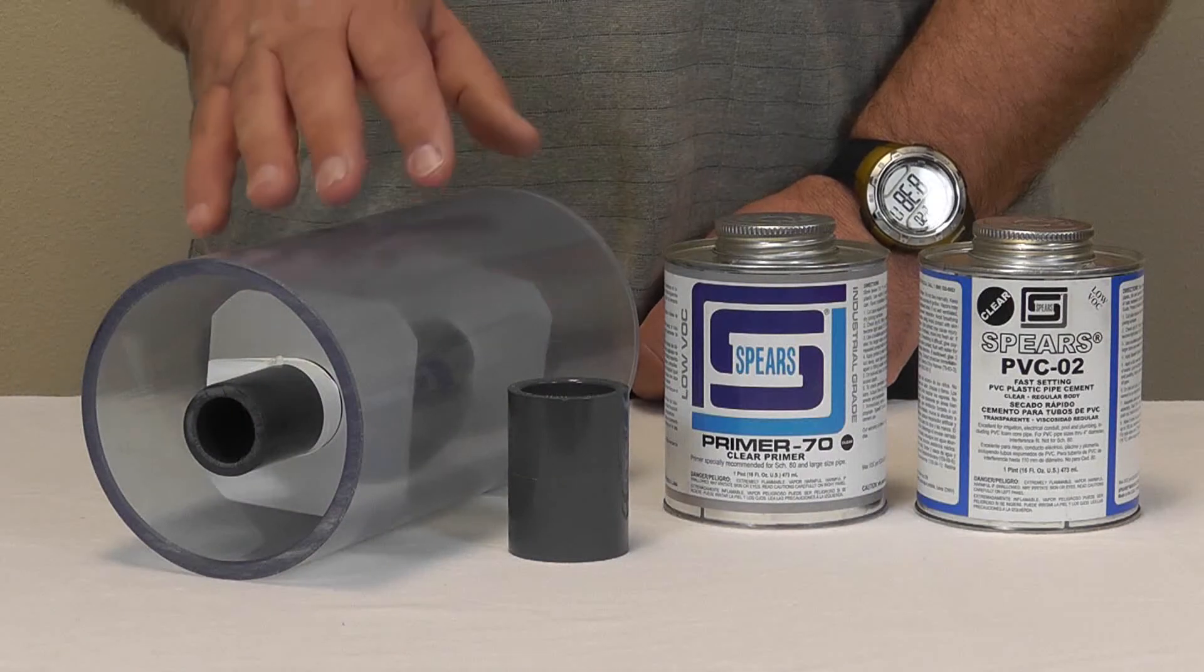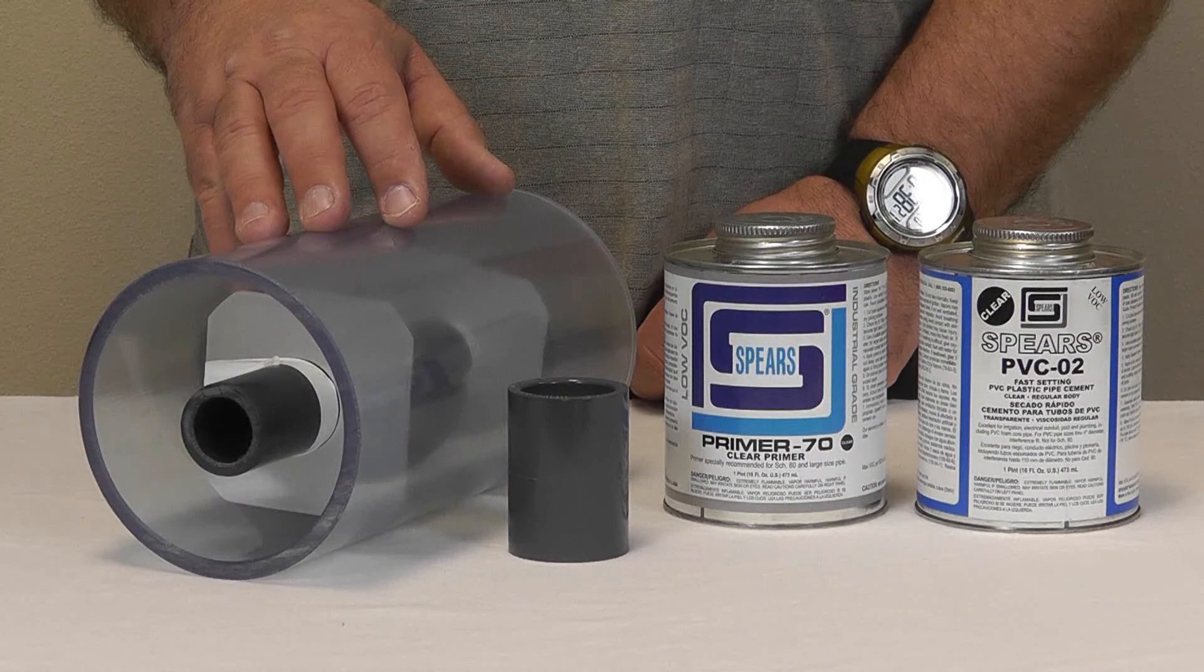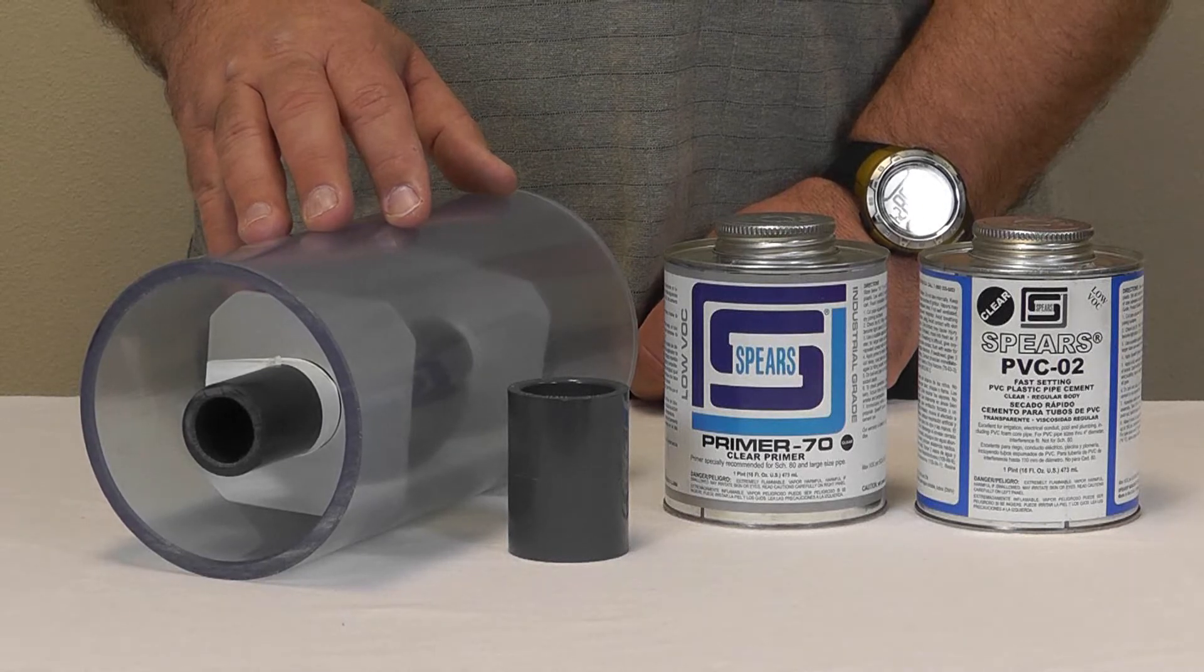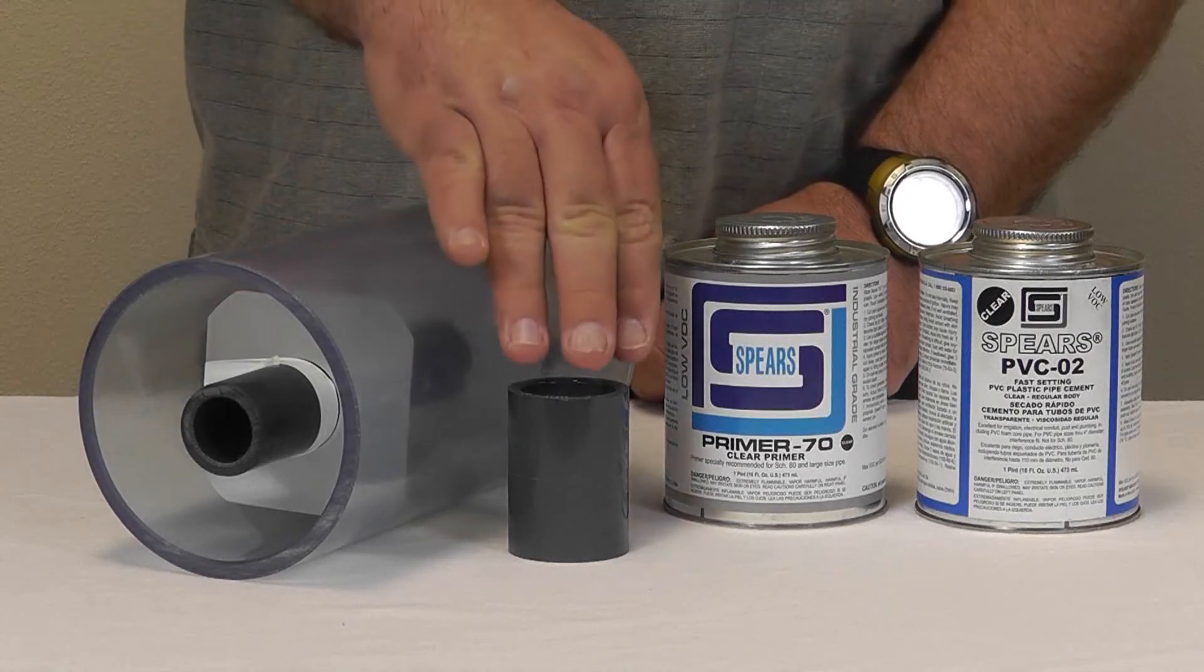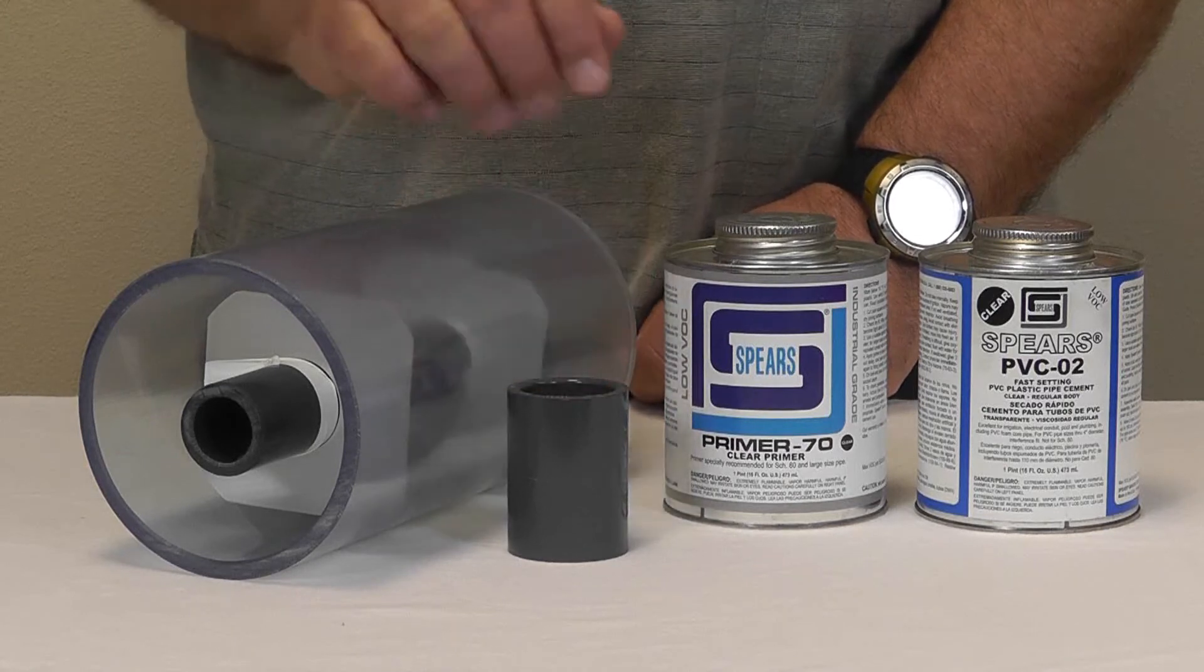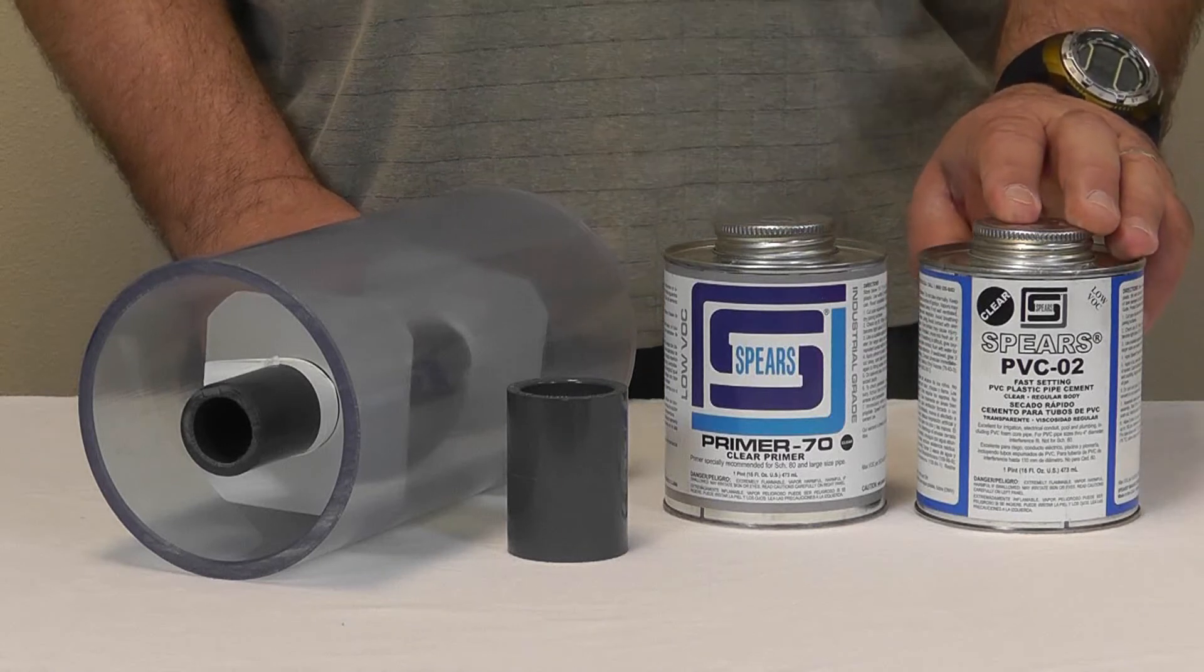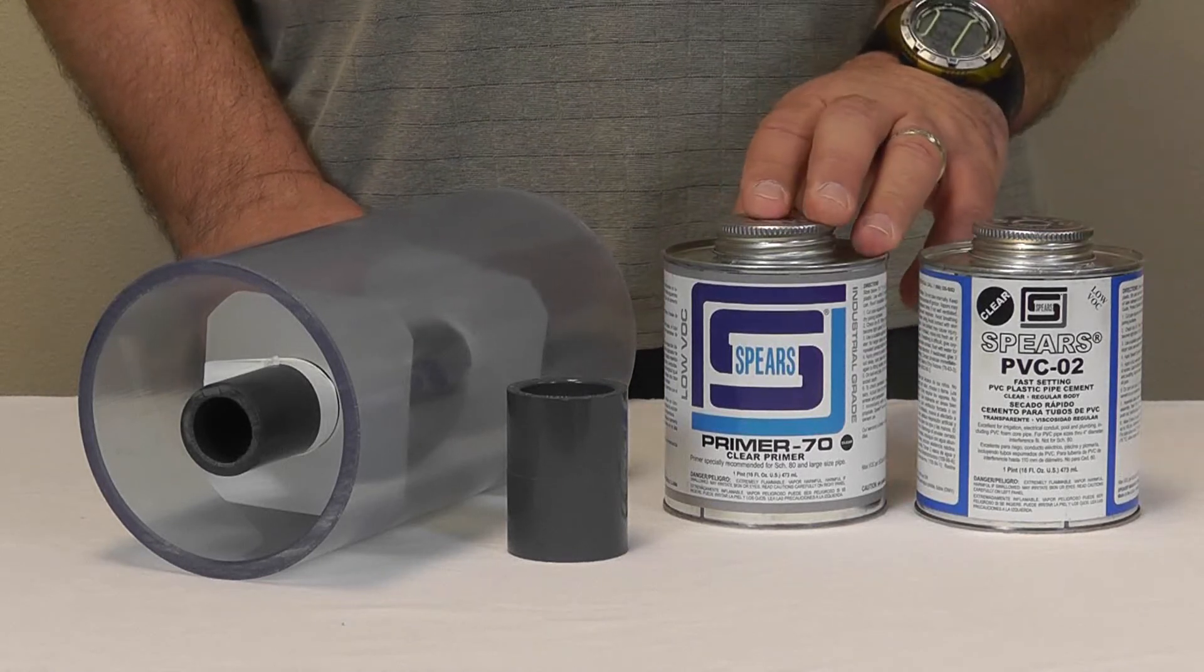For this installation, we'll be using Spears 4-inch Clear PVC for the containment pipe and Spears 1-inch Schedule 80 PVC pipe for the carrier. To connect the carrier pipe together, we'll be using a Spears 1-inch Schedule 80 PVC coupling. We'll also be using Spears PVC-02 Clear Solvent Cement with Spears Clear Primer 70.